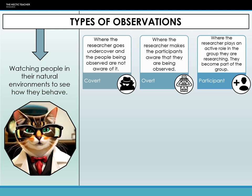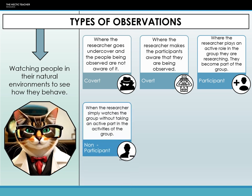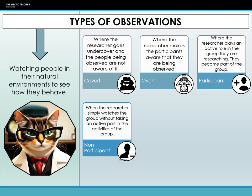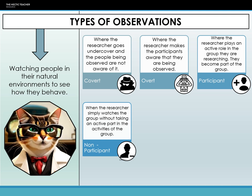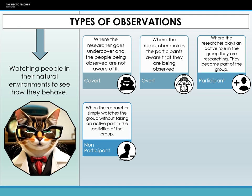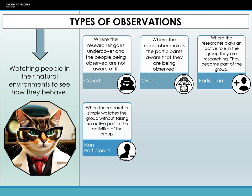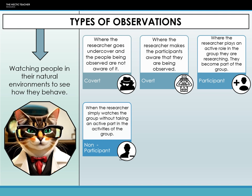Shifting to non-participant observation, it's more of an onlooker's stance. For example, when Ofsted come into schools to complete an inspection. Another example is Atkinson's 1978 research into suicide — he didn't involve himself directly in coroner inquests; he simply observed from the public gallery. This method minimizes interference, offering a detached perspective, but you might miss the insider's view and there's the ever-present observer effect.